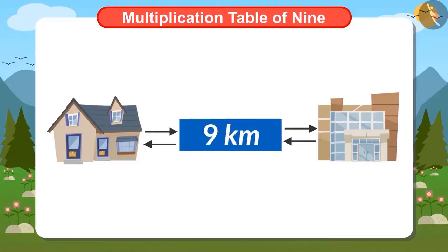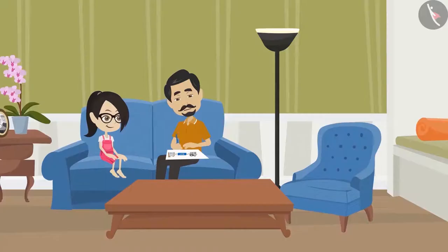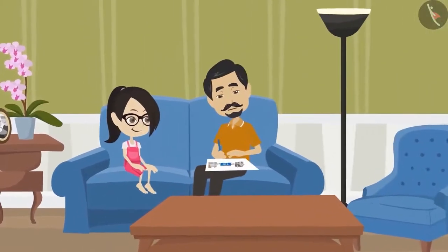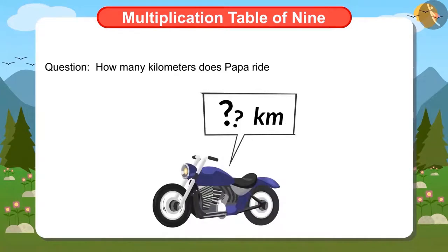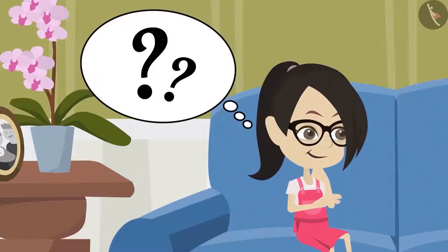Vandana's father drives his motorbike for 9 km to go to his office and come back. Today they are calculating how many km does Papa ride the motorcycle in 10 days. But why are they doing this?